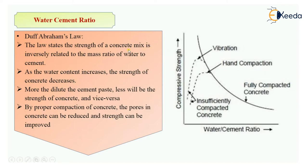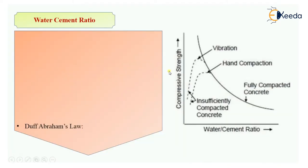The word 'mass ratio' is used here because we are taking water-cement ratio as the weight of water to the weight of cement — mass means weight in grams. Therefore, this law states that the strength of a concrete mix is inversely related to this ratio, which is the water-cement ratio.